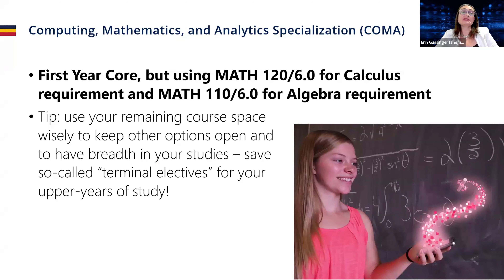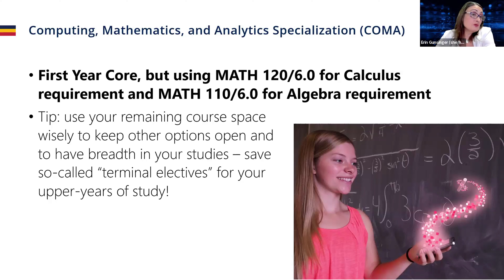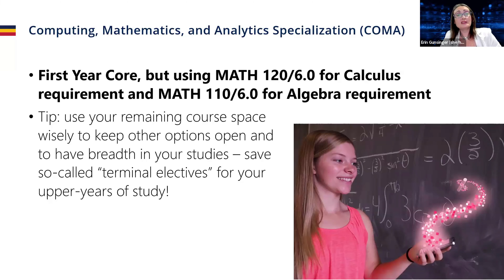The computing math and analytics specialization, or COMA, is another popular plan and probably one of our more challenging ones — it's really geared towards students who love math. The math requirements are a little different: first year core, but you'll be using Math 120, a slightly more intensive calculus course, and Math 110 for your algebra requirement. Tip: use your remaining course space wisely to keep other options open and have breadth in your studies, just in case you change your mind.